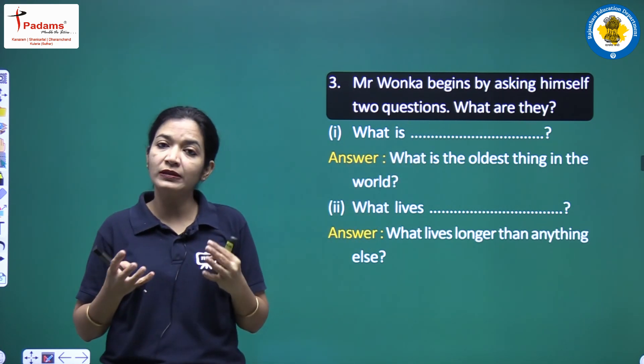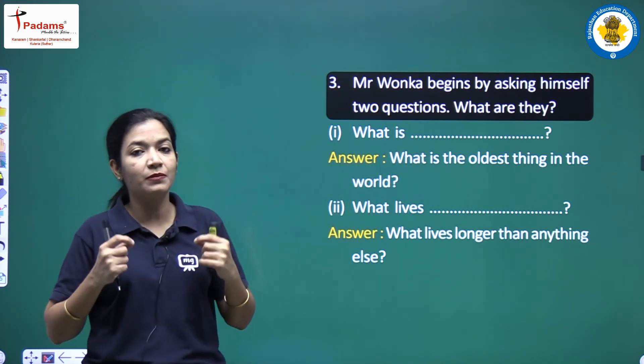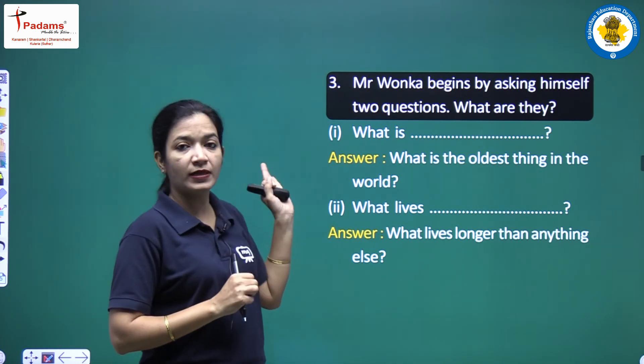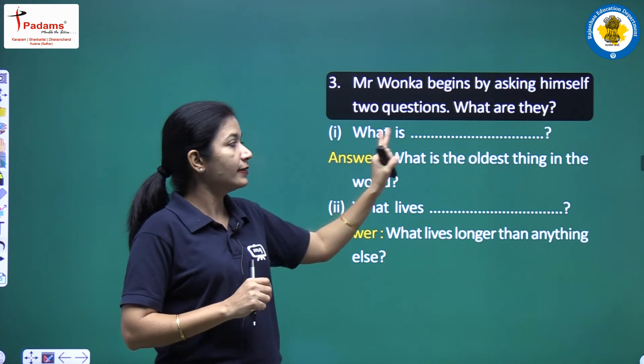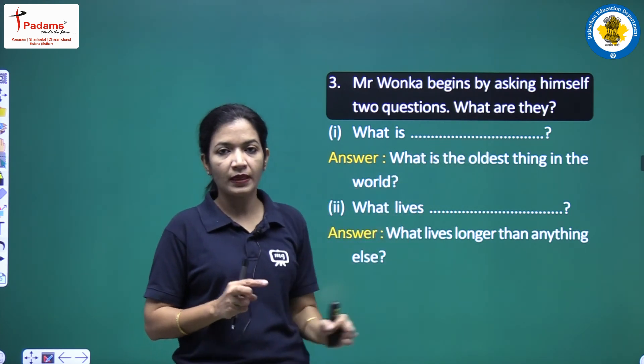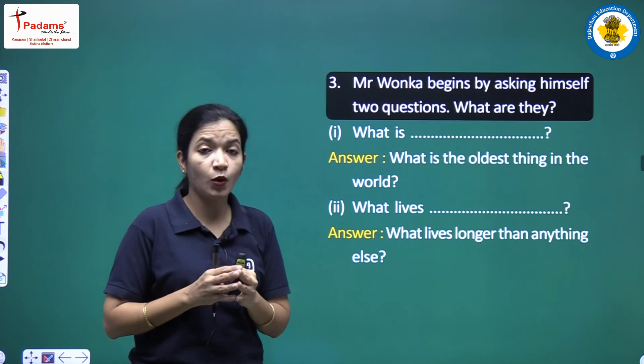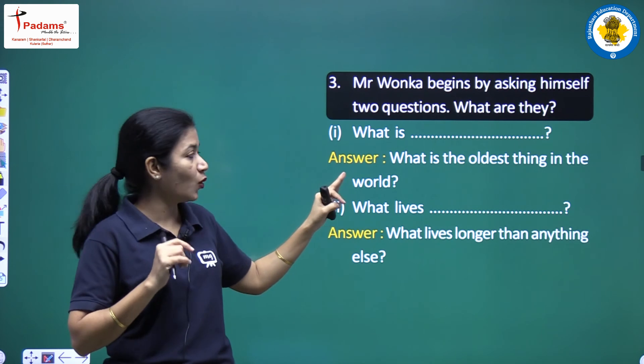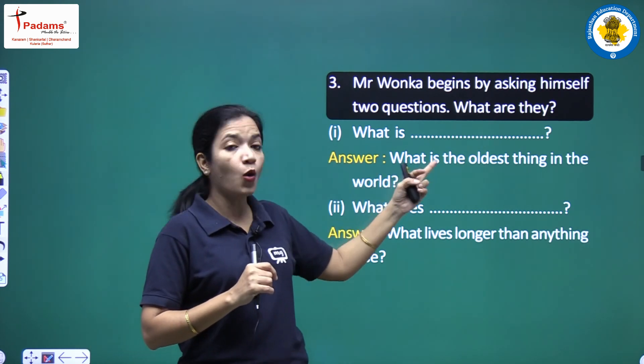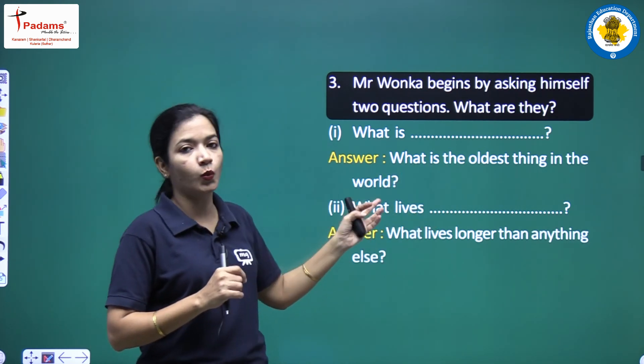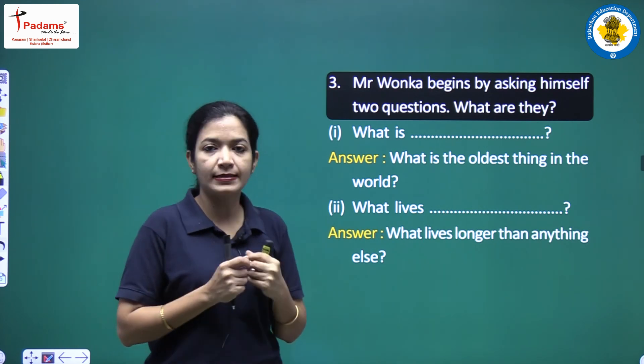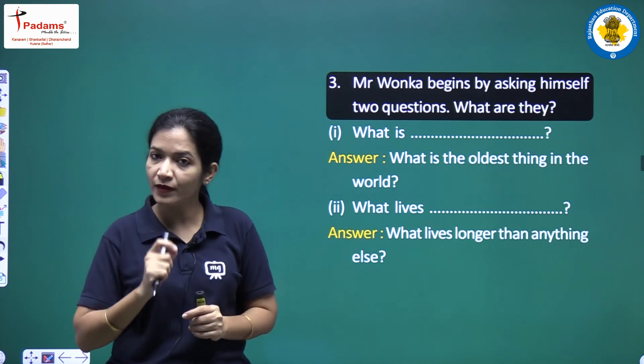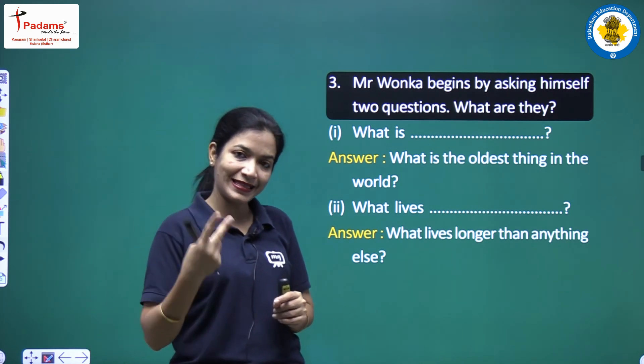What are they? What were the two questions he was asking himself? You can check your book, and if you remember you can answer it. The first question which he was asking himself was: What is the oldest thing in the world? What is the oldest thing in this world?